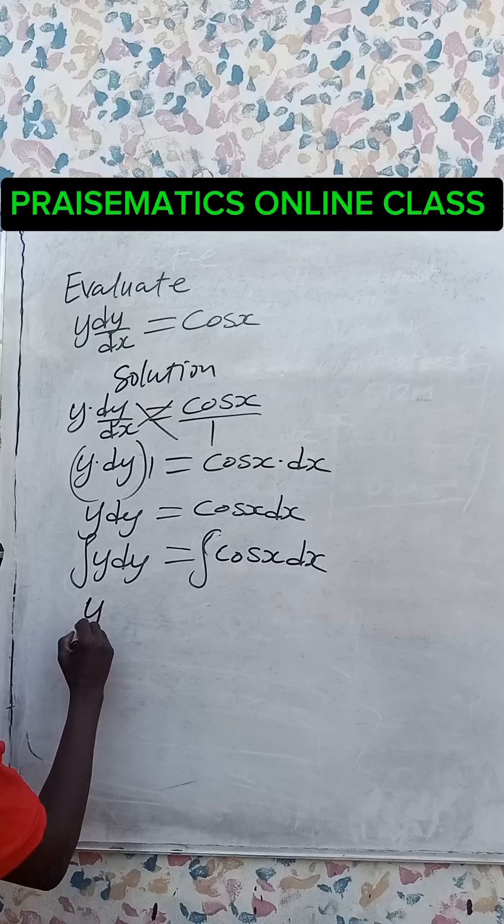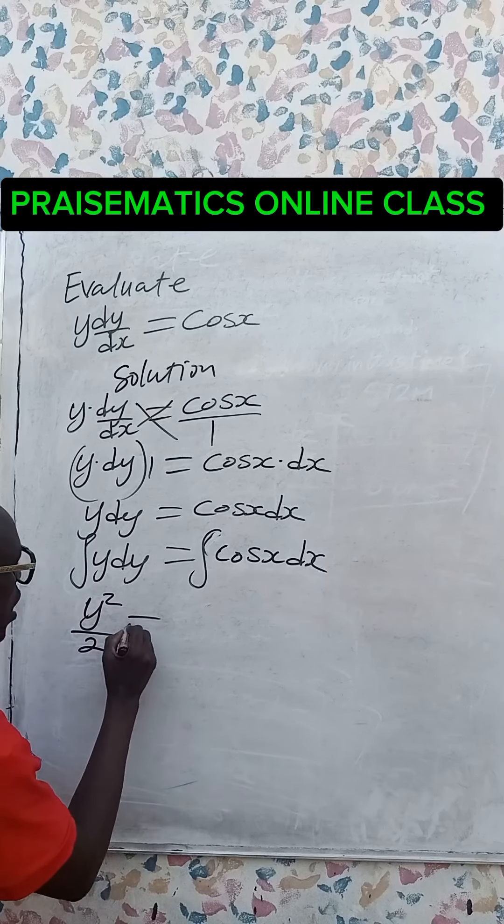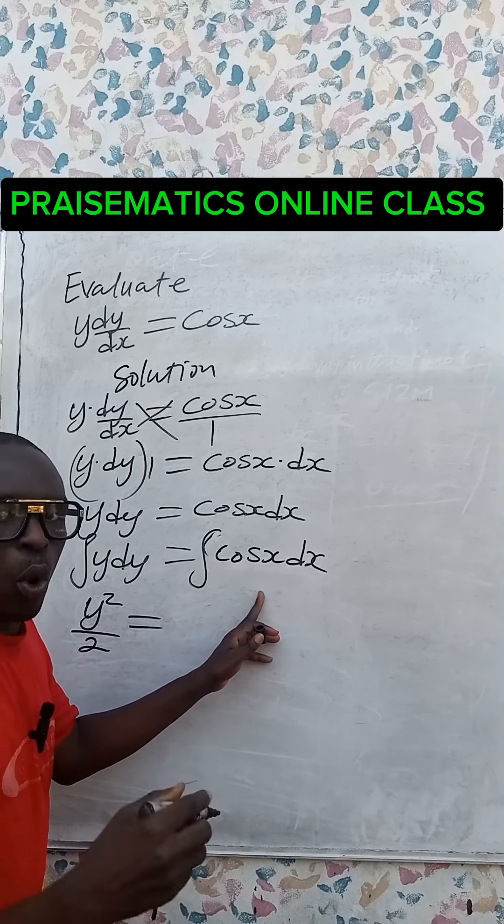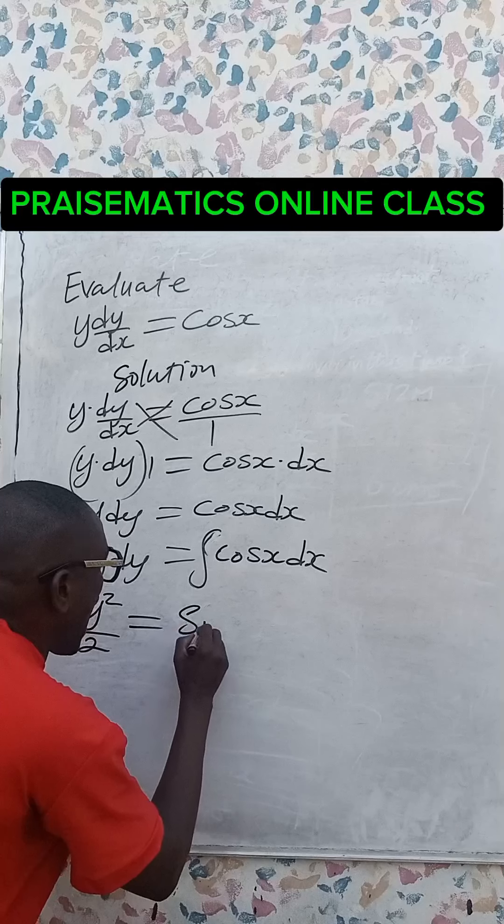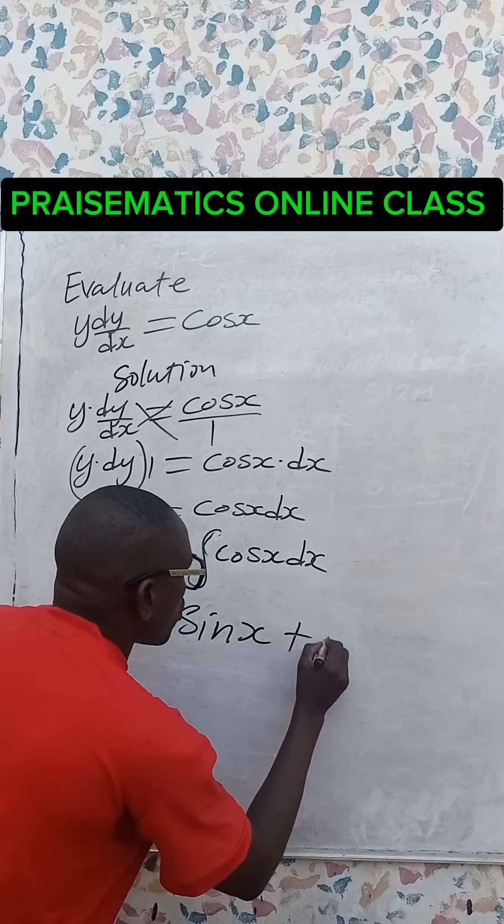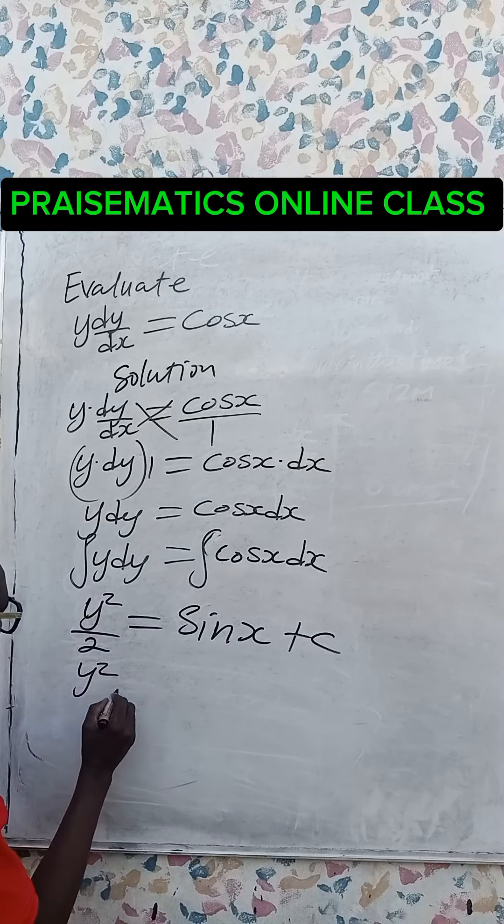Now, when you integrate y dy, you have y squared over 2 equals, whenever you integrate cos x dx, we have sin x plus c. Make y squared the subject of the formula.